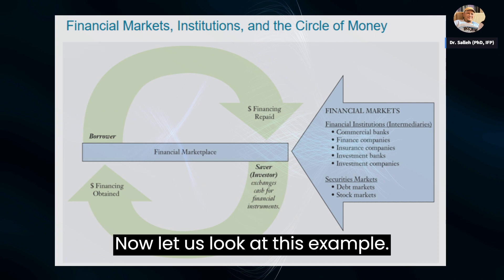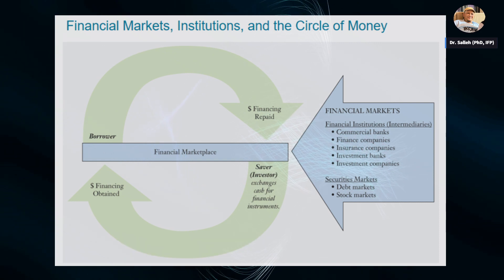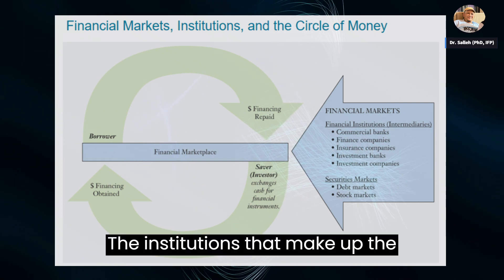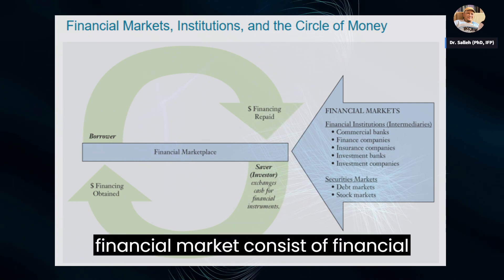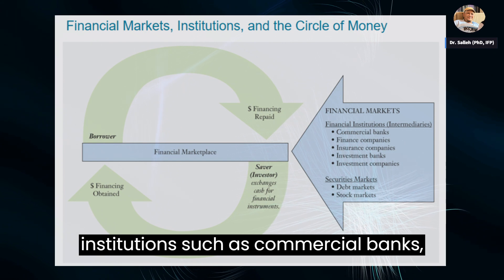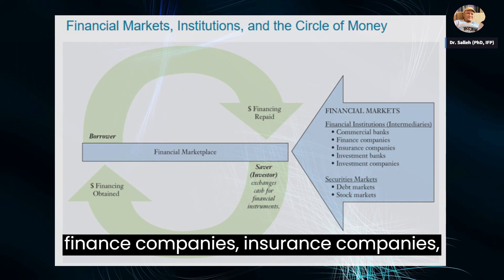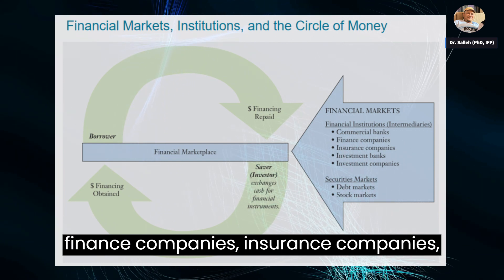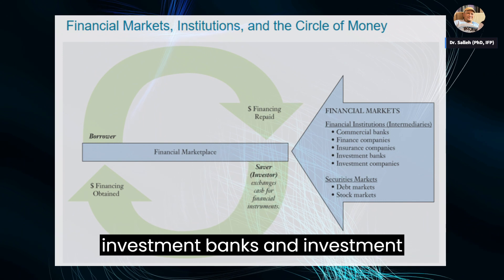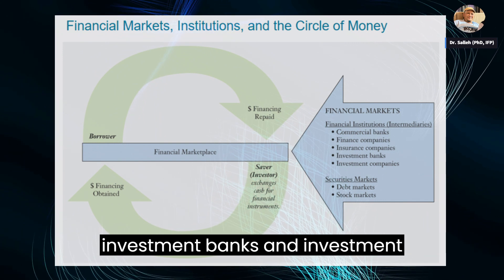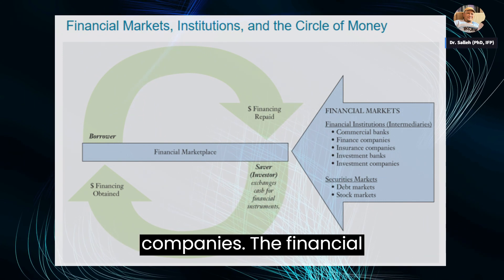Now, let us look at this example. The institutions that make up the financial market consist of financial institutions such as commercial banks, finance companies, insurance companies, investment banks, and investment companies.